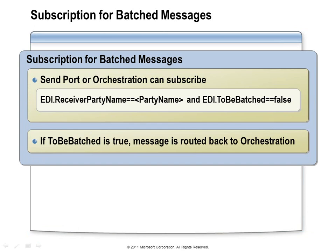When messages go into the orchestration, they have a particular set of context properties that the subscription watches for. But when you want to receive the batch message coming out of the orchestration, you also need to create a subscription — and in that subscription, focus on the receiver party name and make sure you choose 'EDI to be batched' equal to false. If you left that at true, you'd be grabbing messages that should be going to the orchestration. On your send port, set that to false so you know these are messages coming out of the batching orchestration — they're not intended to be batched further, they're ready to be released and sent to a send port.